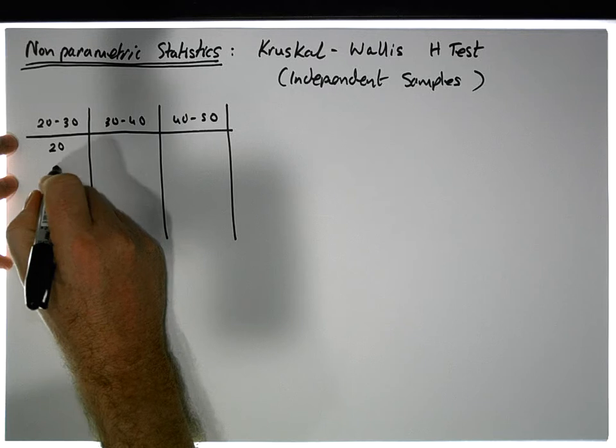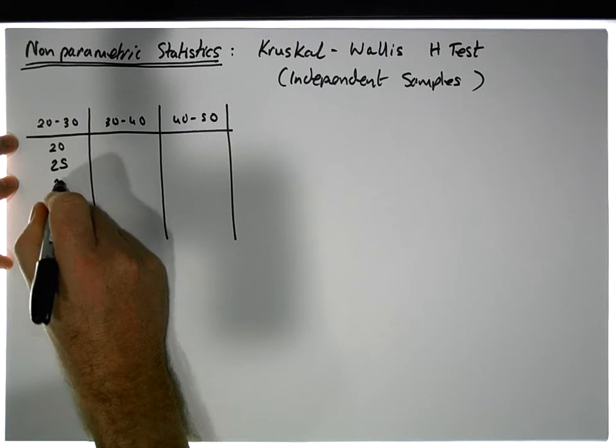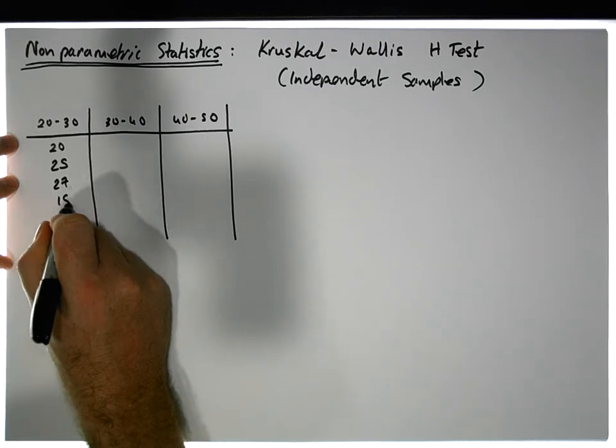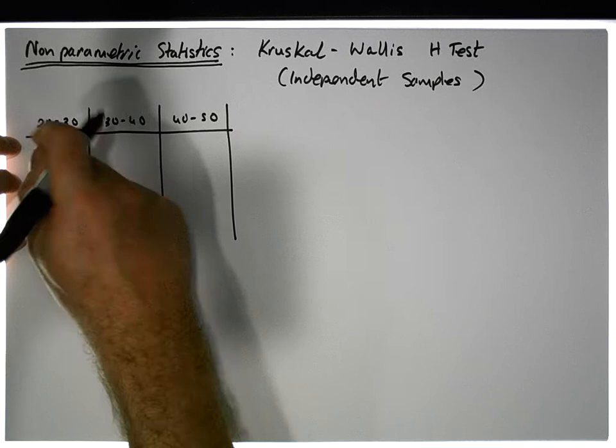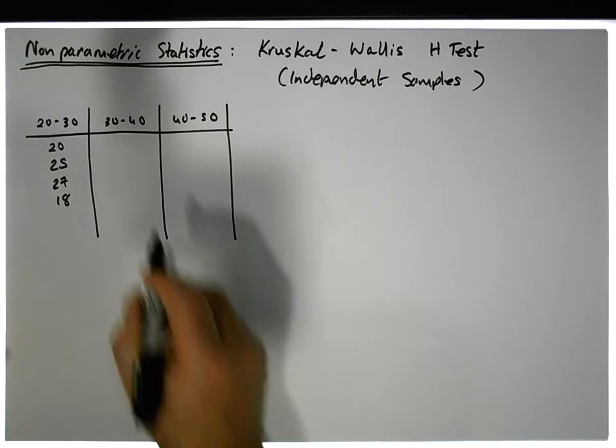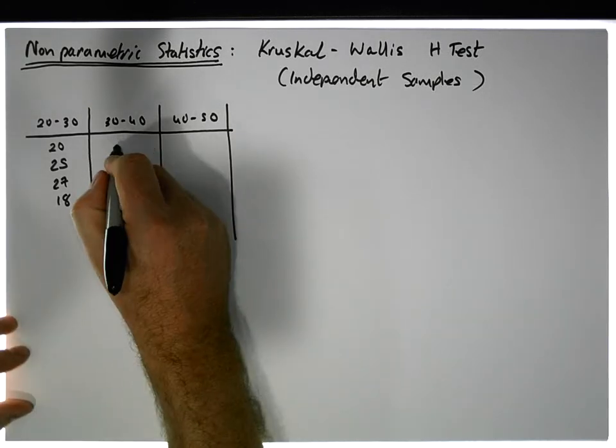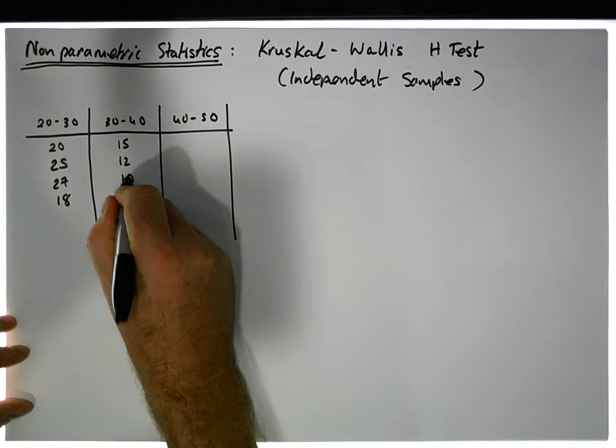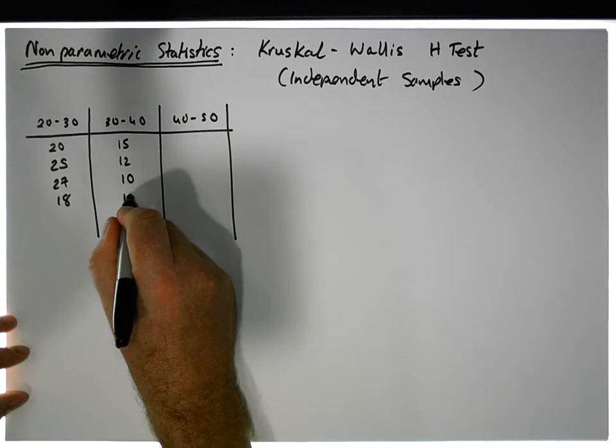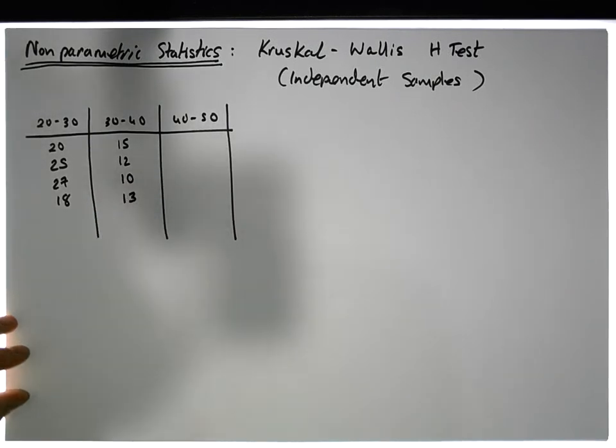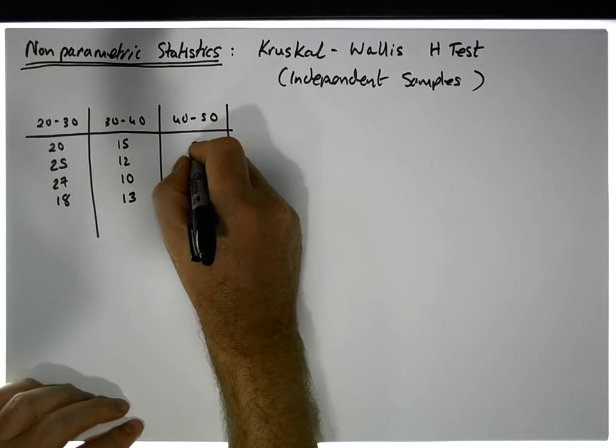And we noticed for the 20 to 30s, they spent 20, 25, 27, and 18 euros on lunch. There were four people in the 20 to 30 age group. 30 to 40 year olds spent 15, 12, 10, and 13 euros on lunch.